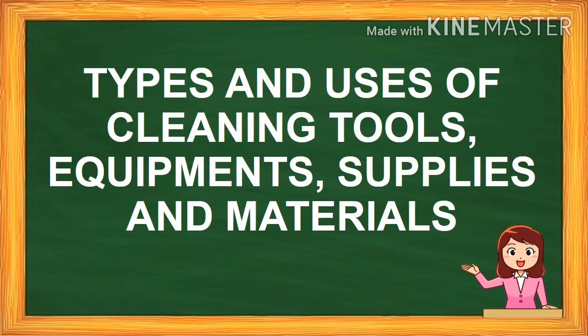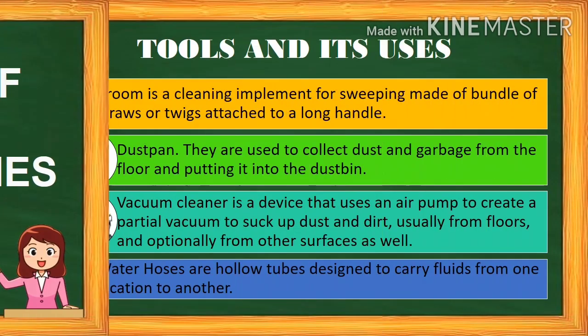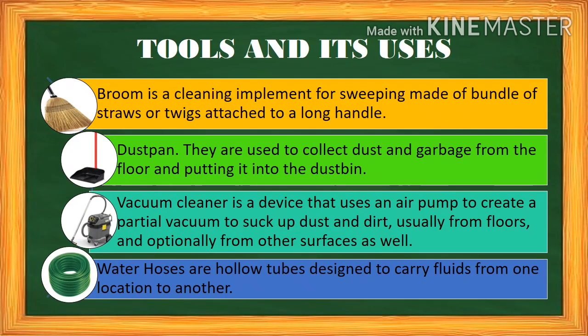Let's discuss the different types and uses of cleaning tools, equipment, supplies, and materials. First, we have the broom — a cleaning implement for sweeping, made of a bundle of straws or twigs attached to a long handle, or in Tagalog, ito yung walis. Second, the dustpan, used to collect dust and garbage from the floor and putting it into the dustbin.